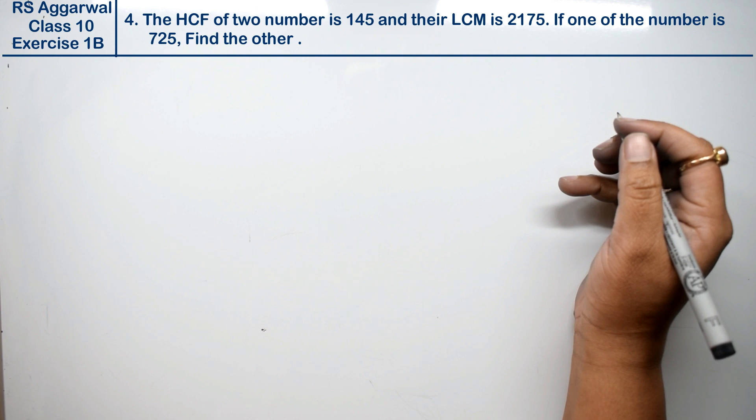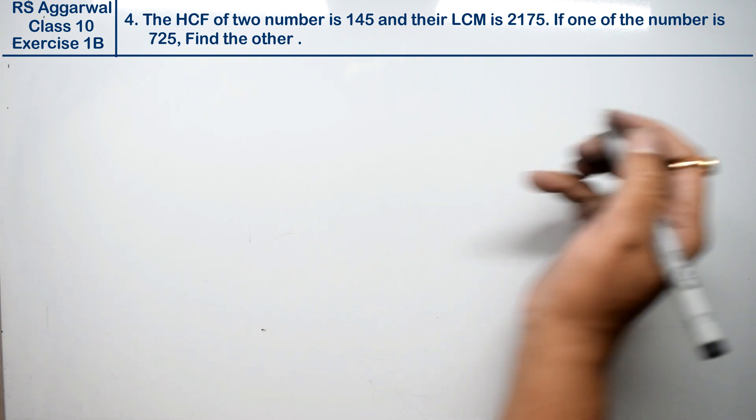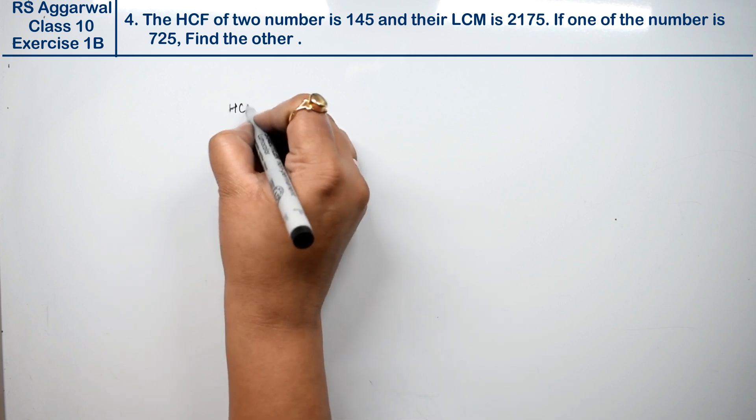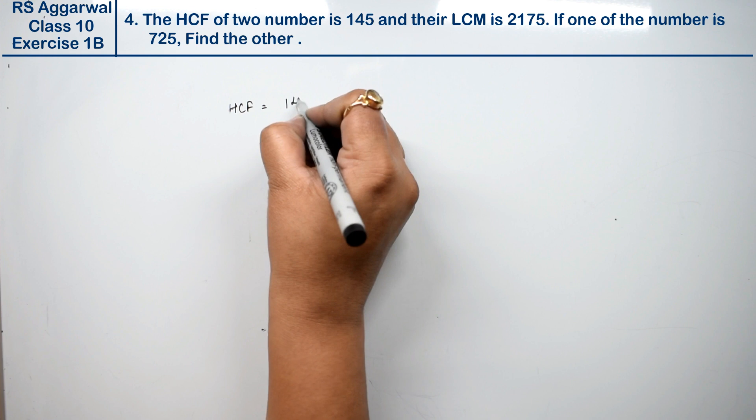Let's do question number 4 of exercise 1B on real numbers. The HCF of two numbers is 145.